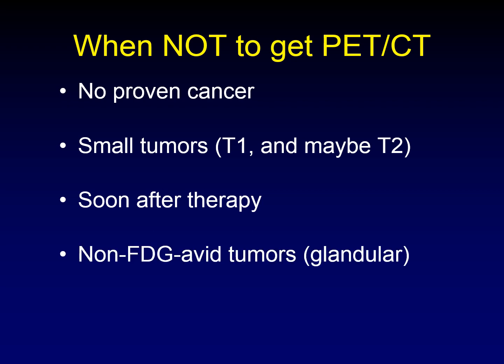Be wary of non-FDG avid tumors — specifically glandular tumors like some forms of thyroid cancer and salivary cancers. These are frequently non-FDG avid. If they are de-differentiated, they probably are FDG avid, but if they are well-differentiated tumors, PET-CT will not find them and may give you a false sense of security when it comes up negative.